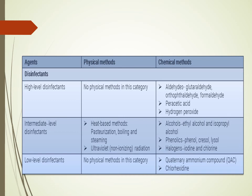There are three classifications of disinfectants. High-level disinfectants in chemical methods include aldehydes, peracetic acid, and hydrogen peroxide; there is no physical method in this category. Intermediate-level disinfectants include heat-based physical methods such as pasteurization, boiling, and steaming, as well as ultraviolet radiation; chemically, this category includes alcohols, phenolics, and halogens. Low-level disinfectants include only quaternary ammonium compounds and chlorhexidine in the chemical methods, with no physical method in this category.